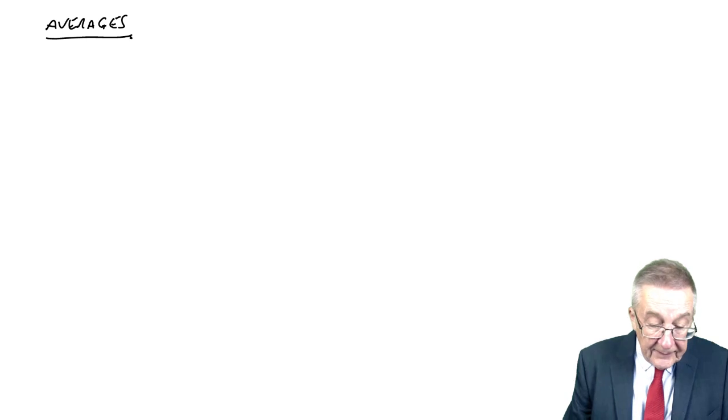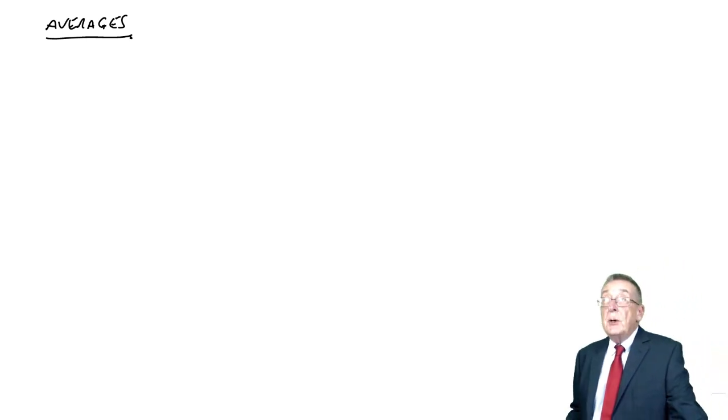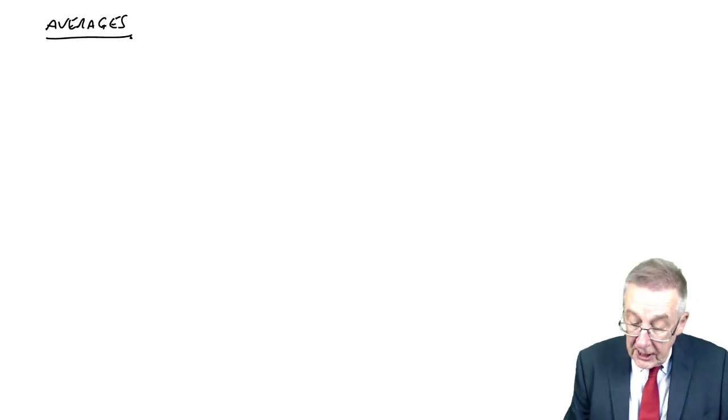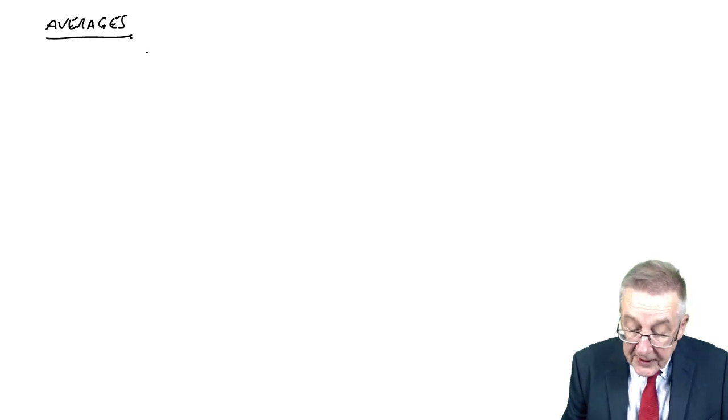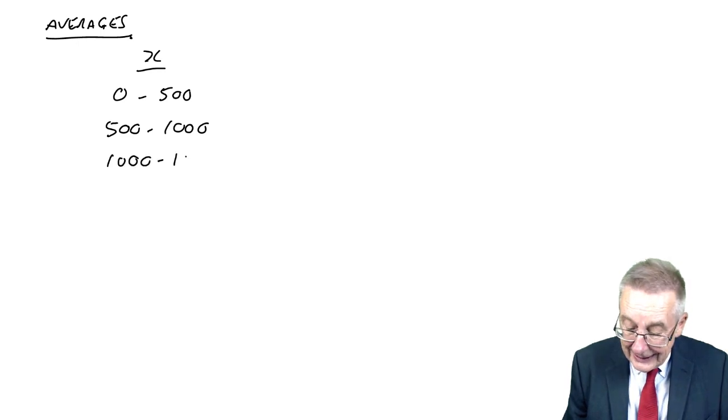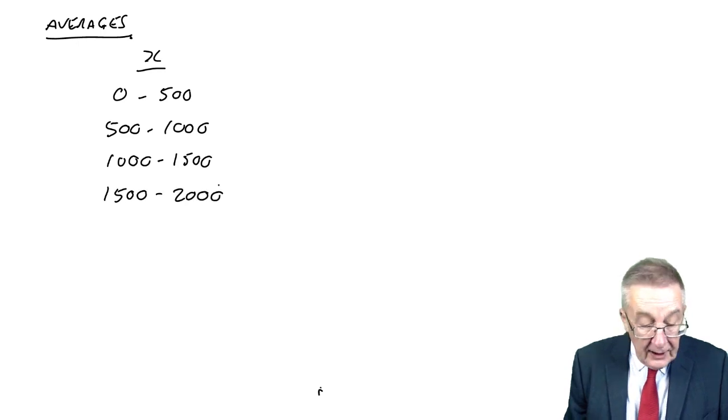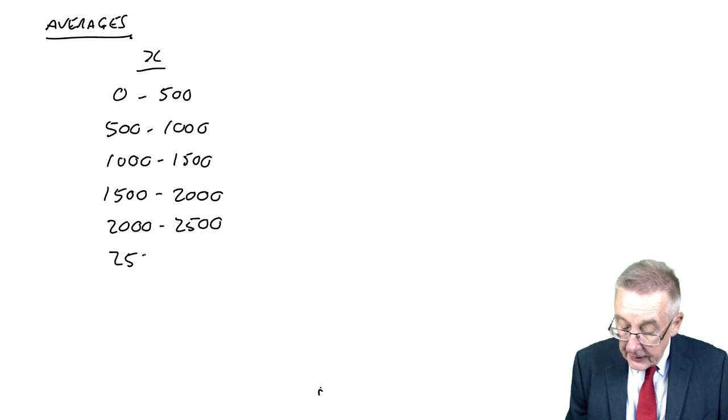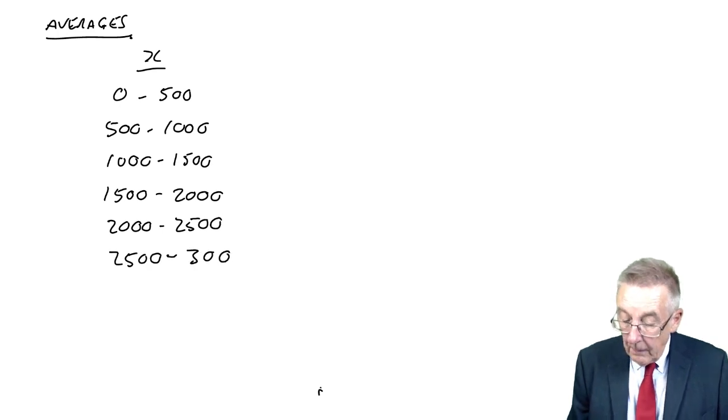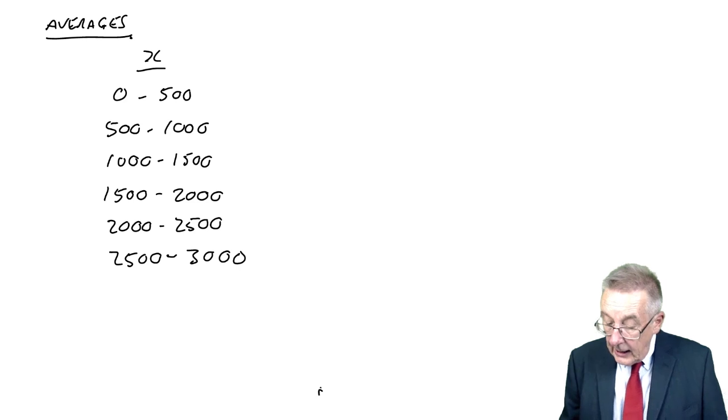Let me write up the table. It's the total amount paid to employees each week over the last year. So the amount paid, the observation X: 0 to 500, 500 to 1000, 1000 to 1500, 1500 to 2000, 2000 to 2500, and finally 2500 to 3000.